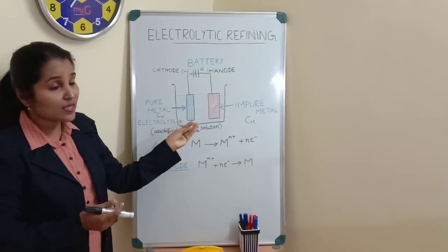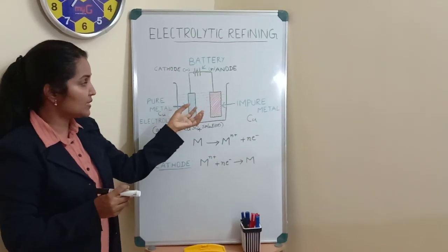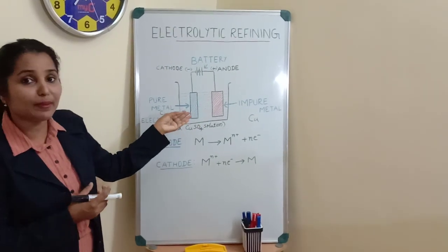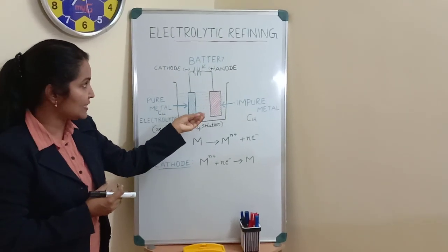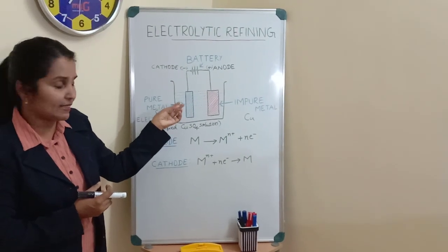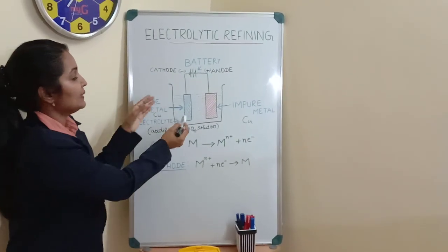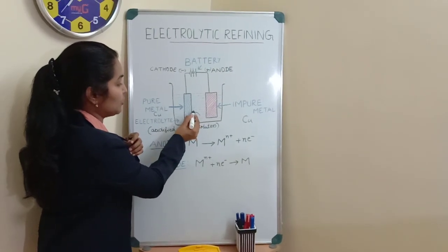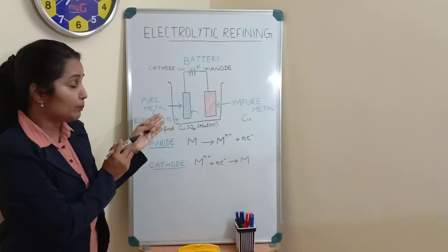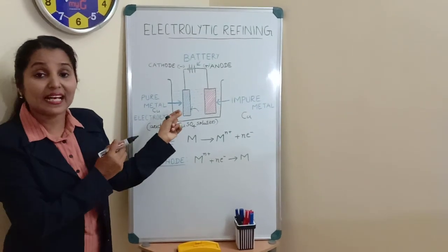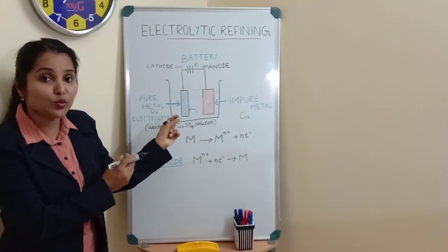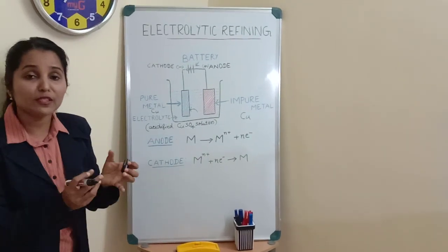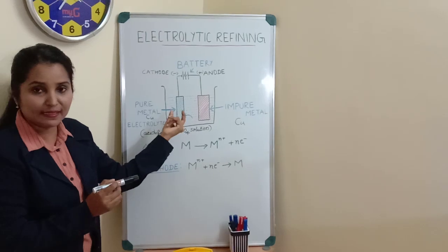Those Cu²⁺ cations that have come into the solution or electrolyte will be attracted by the cathode. These positively charged ions will be attracted by the negatively charged electrode. The Cu²⁺ ions will come from the solution to this fine copper strip, where they will accept two electrons to become copper metal. The formed copper metal will stick on this fine metal strip.